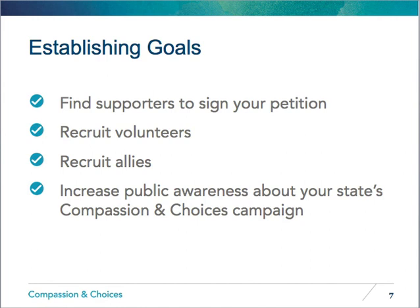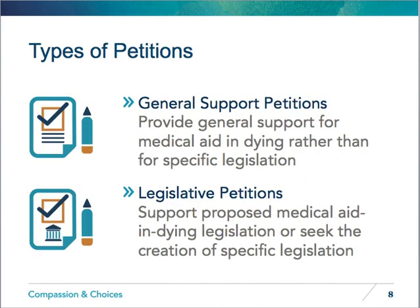Compassion and Choices recommends that you choose between two basic types of petitions: general support petitions and legislative petitions. Talk to your state volunteer manager about which one is right for you. It depends upon how you wish to submit the petition and whether legislation is under consideration in your state. General support petitions ask people to sign in general support of medical aid in dying, but not for specific legislation.